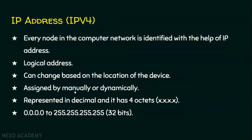We can assign an IP address manually or even dynamically. We will talk about this in the network layer part. For now, just understand that IP addresses can be assigned manually or even dynamically. IPv4 addresses are represented in decimal and have four octets — that means four parts — in the format x.x.x.x. Each x takes a value between 0 and 255. So the starting IP address will be 0.0.0.0 and the last will be 255.255.255.255.